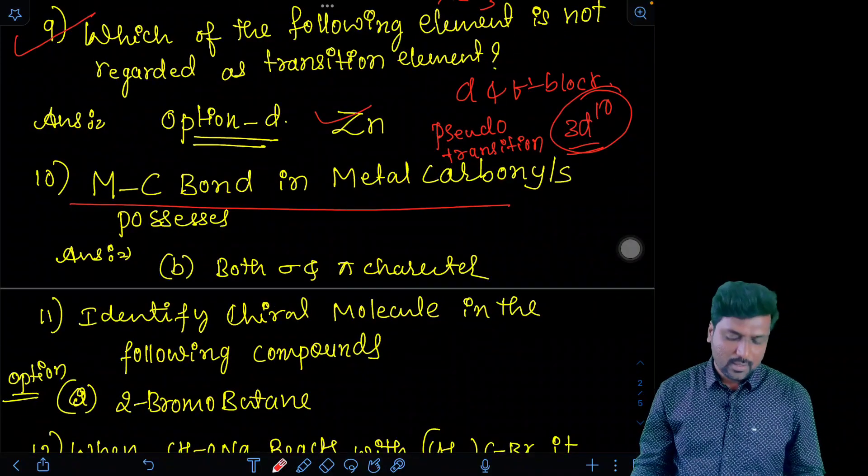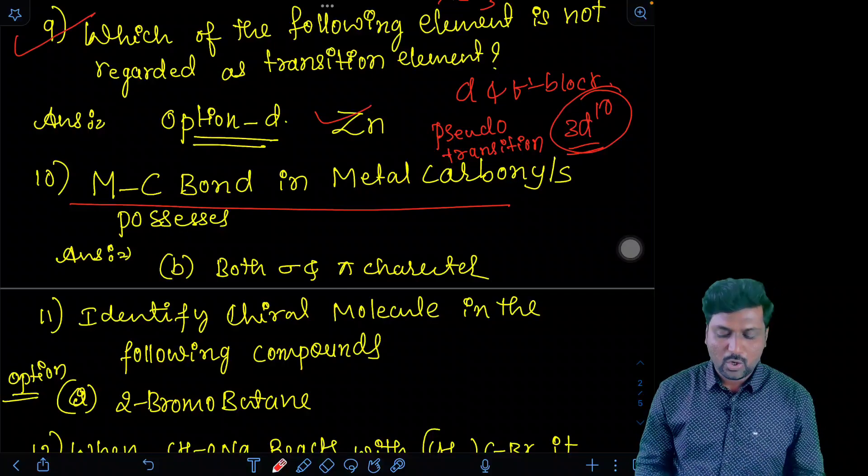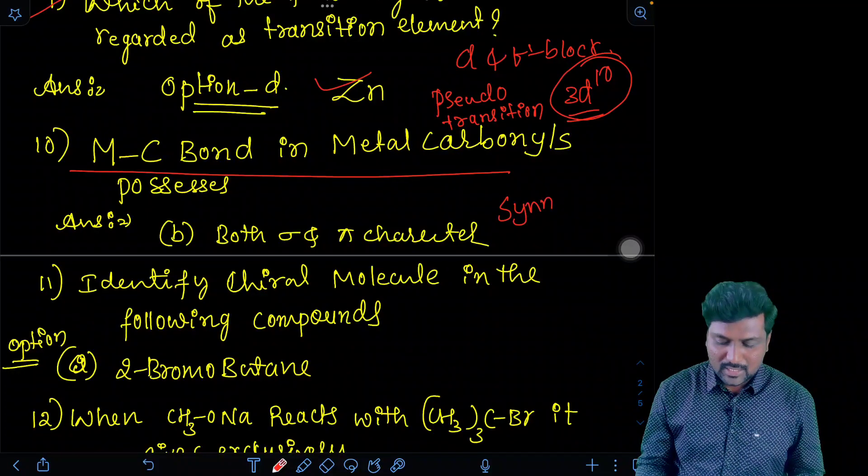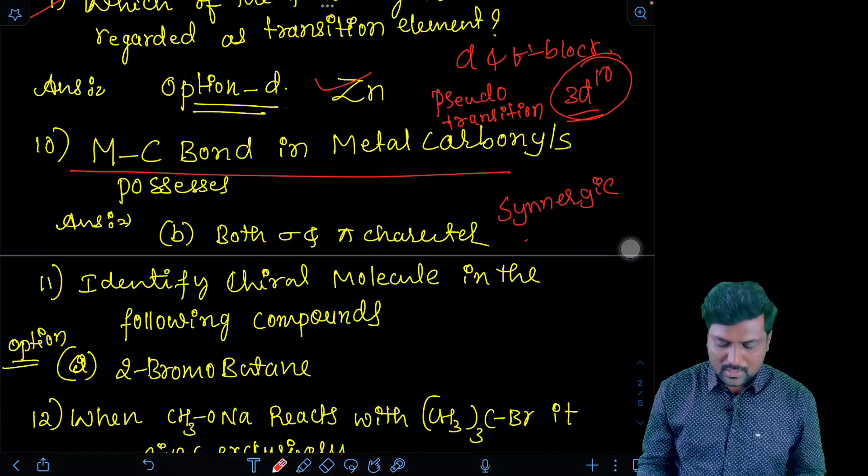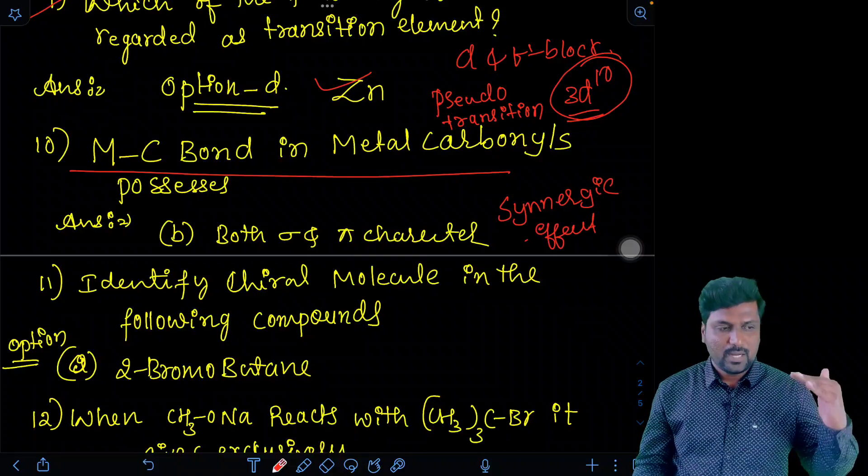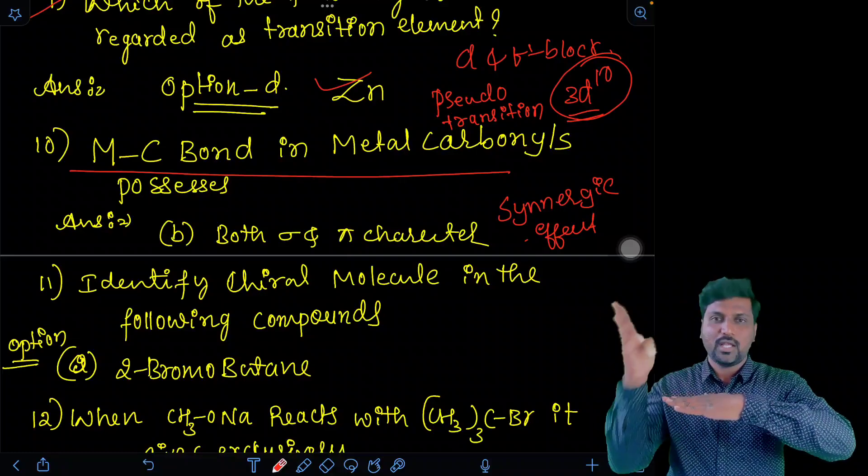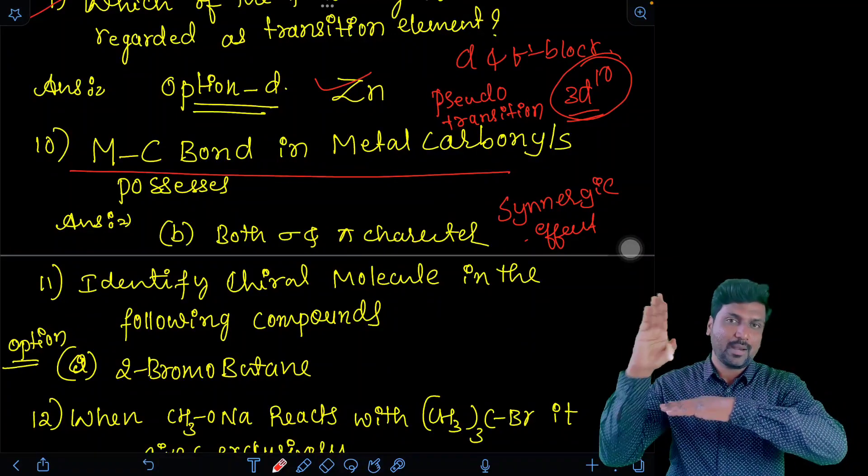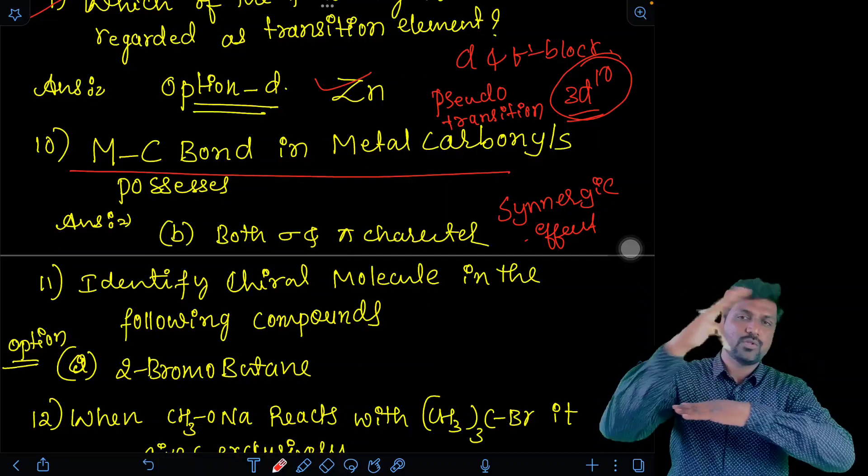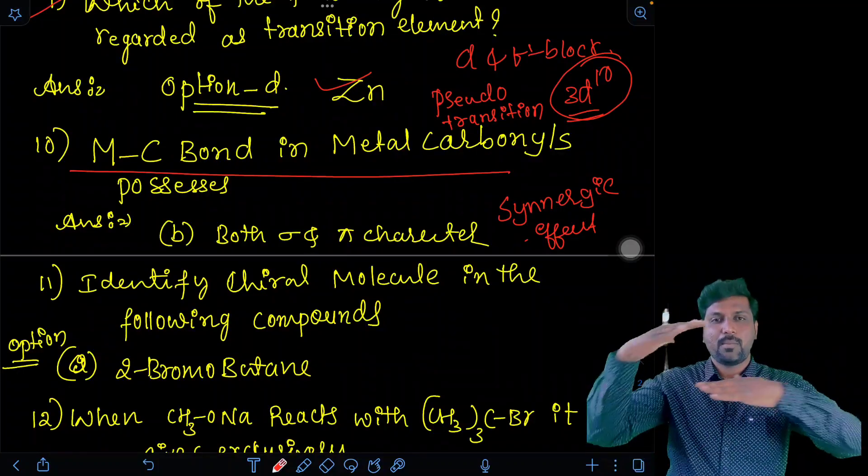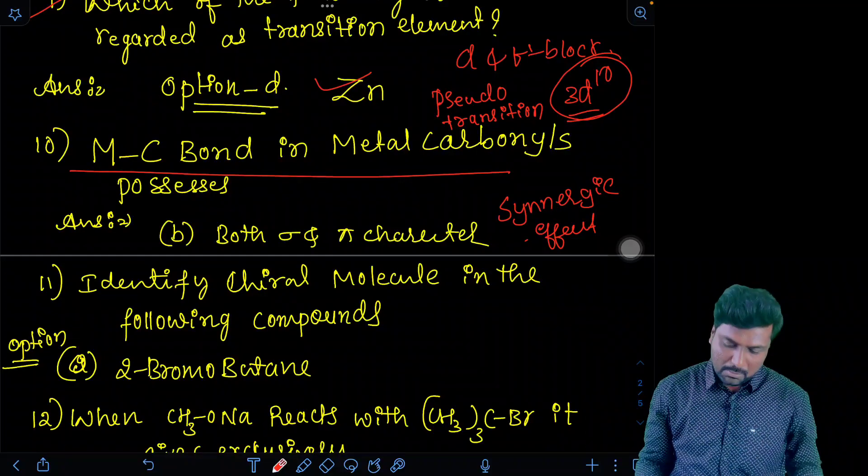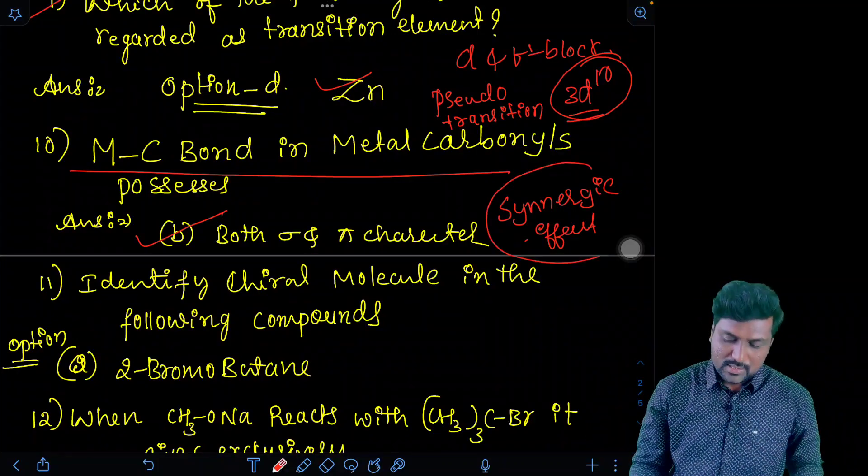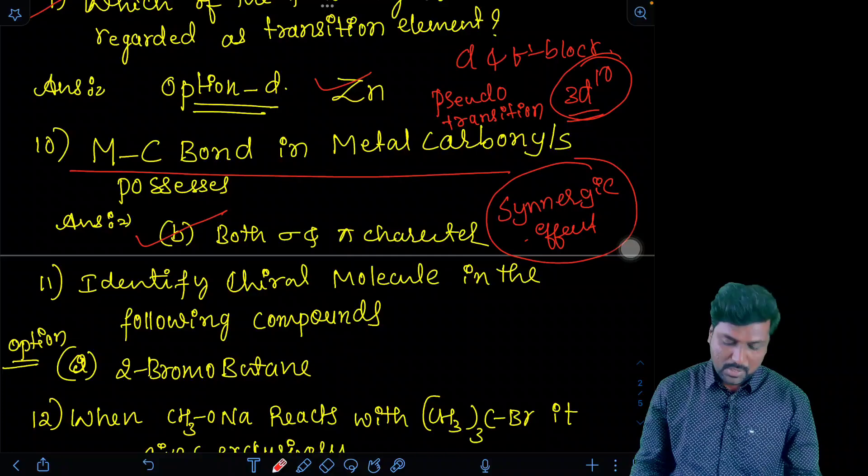Tenth question. Coordination compound. The metal carbon bond in the metal carbonyl possesses both sigma and pi bond due to synergic effect. See here, textbook synergic effect. Metal will form a coordination bond with the sigma bond. Backbonding is done by the antibonding pi star 2px orbital of carbon monoxide. Carbon gives electrons back to the metal and forming a pi bond. That is, it has sigma as well as pi characters. That is, strengthen. They both give strength to each other by backbonding. This is synergic effect. Answer is both sigma and pi character.